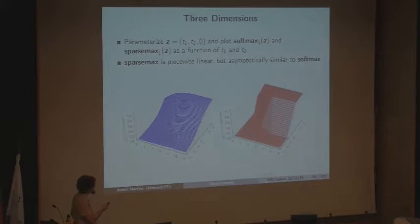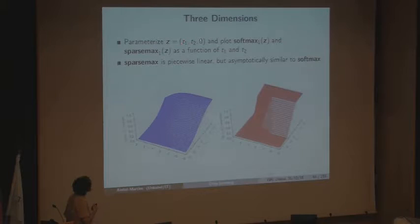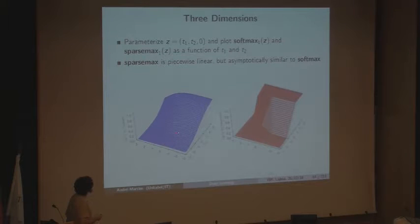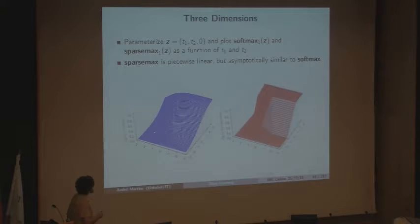In three dimensions, we get something similar. We parameterize our three numbers using two coordinates with one fixed to zero, and plot everything as a function of t1 and t2. Again, softmax gives a three-dimensional surface that looks like a sigmoid, while sparsemax gives a piecewise linear function.